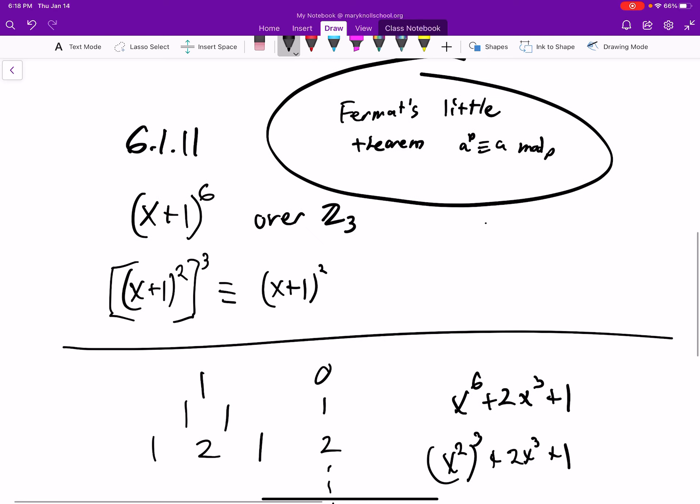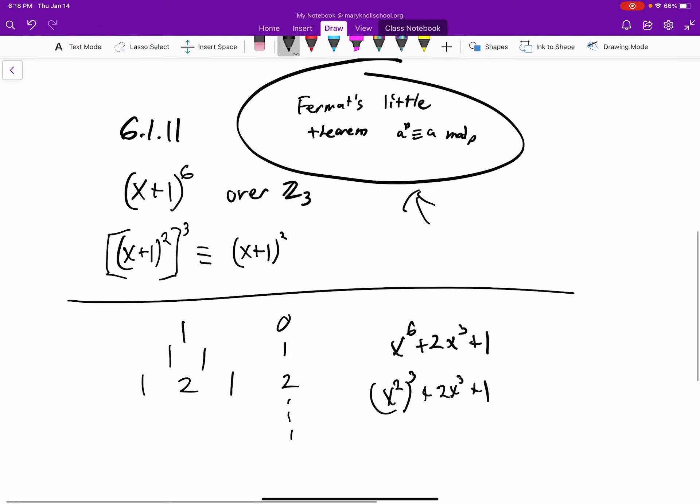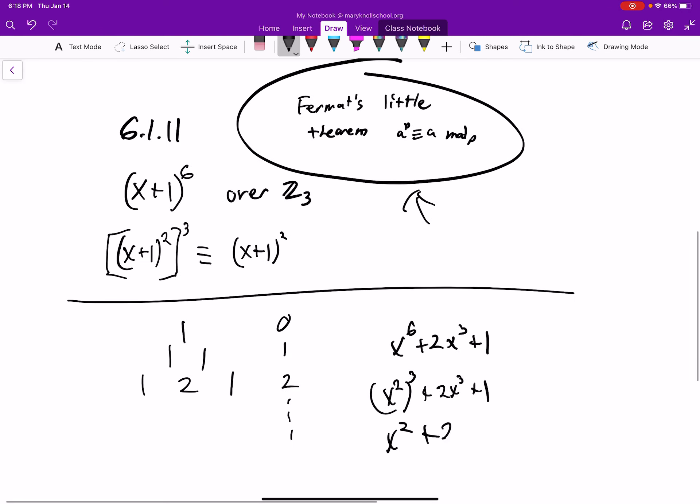Now, use Fermat's Little Theorem over here. And then this is going to turn into x squared plus 2x plus 1, which is what we have here. x squared plus 2x plus 1, and we're done.